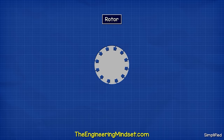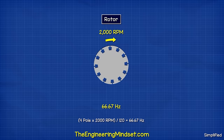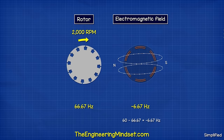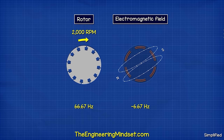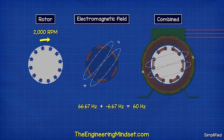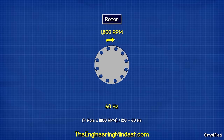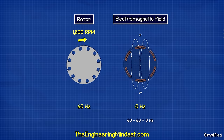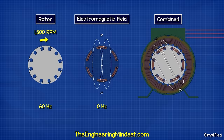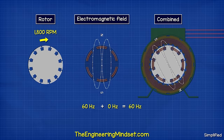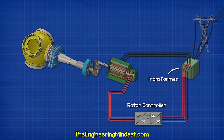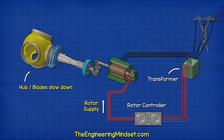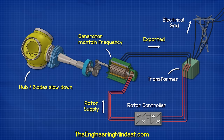If the speed of the shaft increases to 2000 rpm — equivalent to 66.67 Hz — that is much too fast. So we need to subtract 6.67 Hz, achieved by rotating the electromagnetic field in the opposite direction to the rotor. If the rotor is exactly at the required 1800 rpm, we require 0 Hz — which is DC electricity — so we apply a constant current to the rotor and the magnetic field rotates only with the shaft, giving us 60 Hz at the stator. The controller constantly makes adjustments to the frequency of the rotor current to ensure a 60 Hz output is maintained.